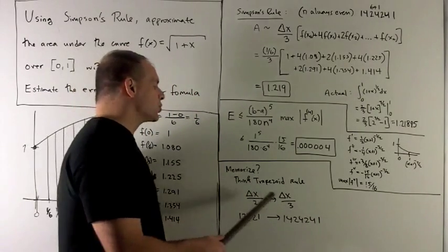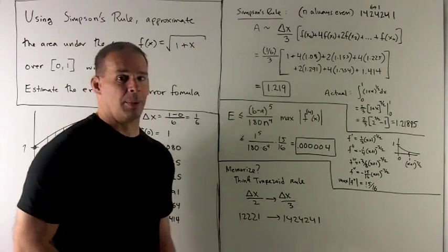So, you have the trapezoid rule down. Simpson's rule is just a couple more steps.